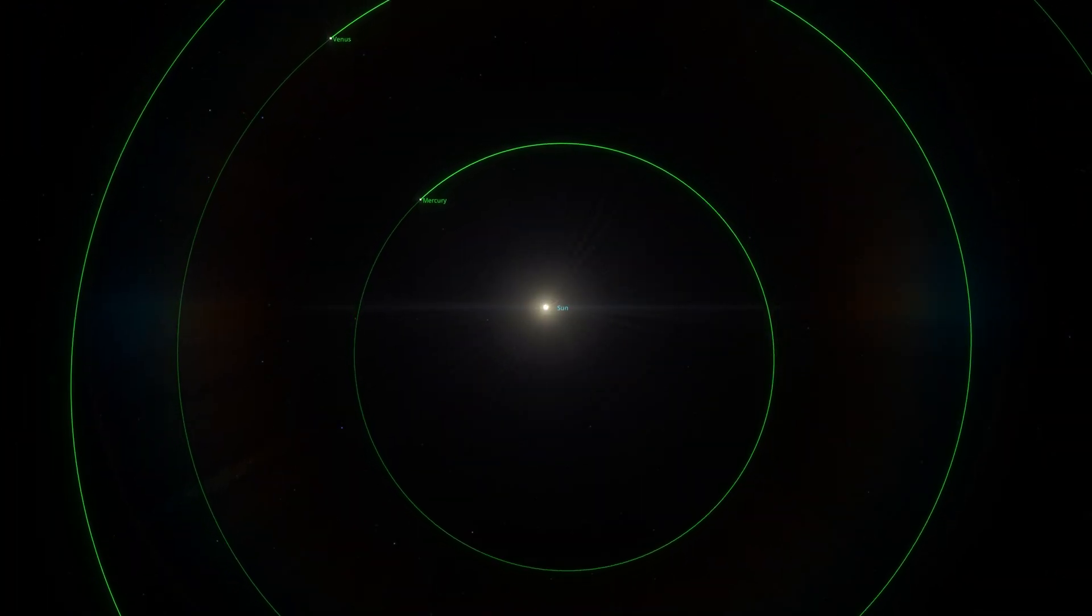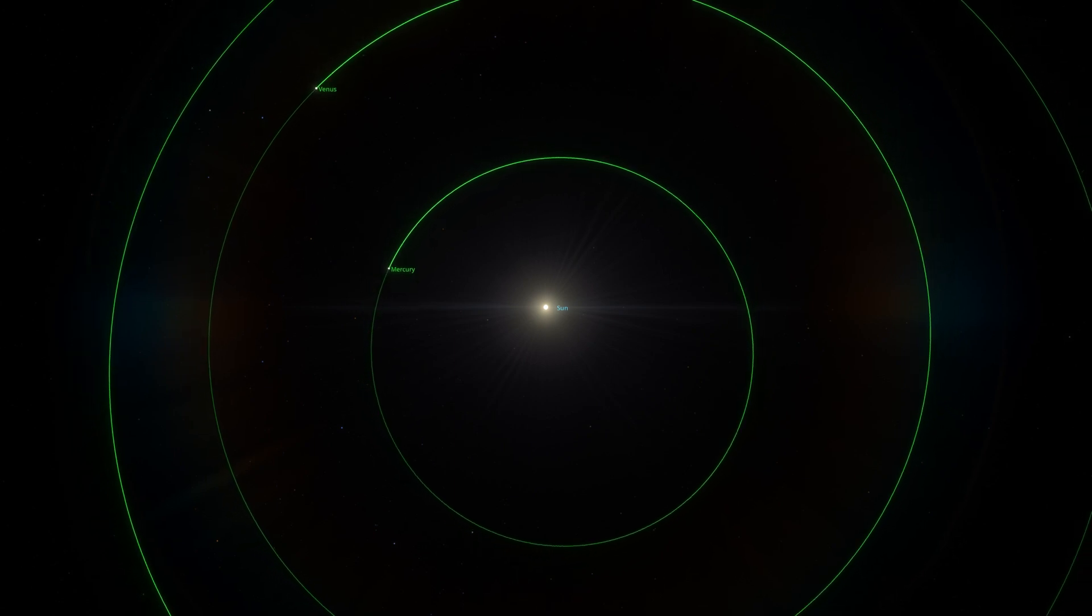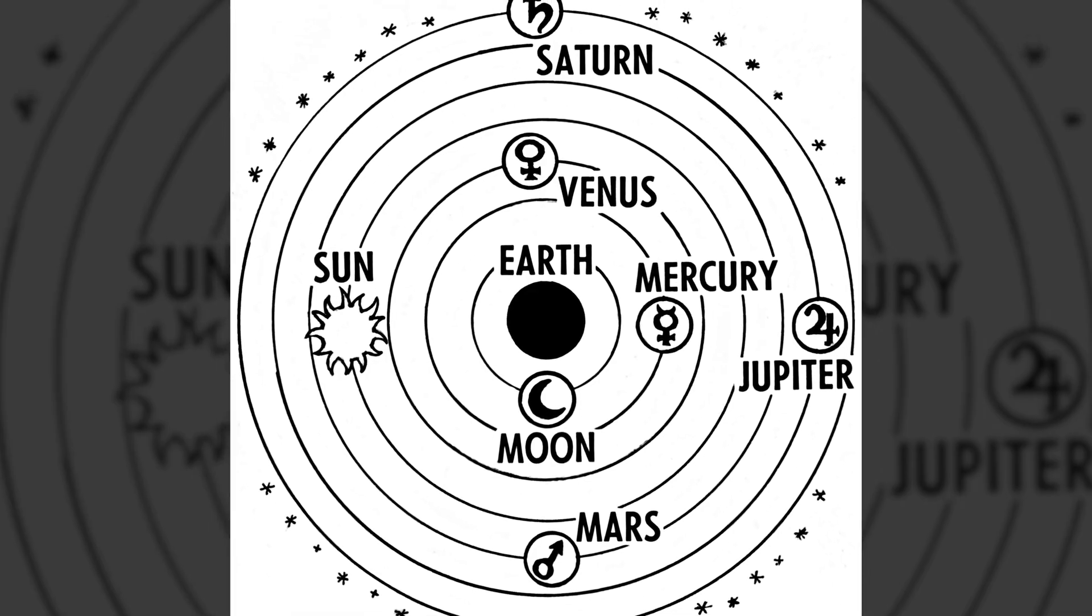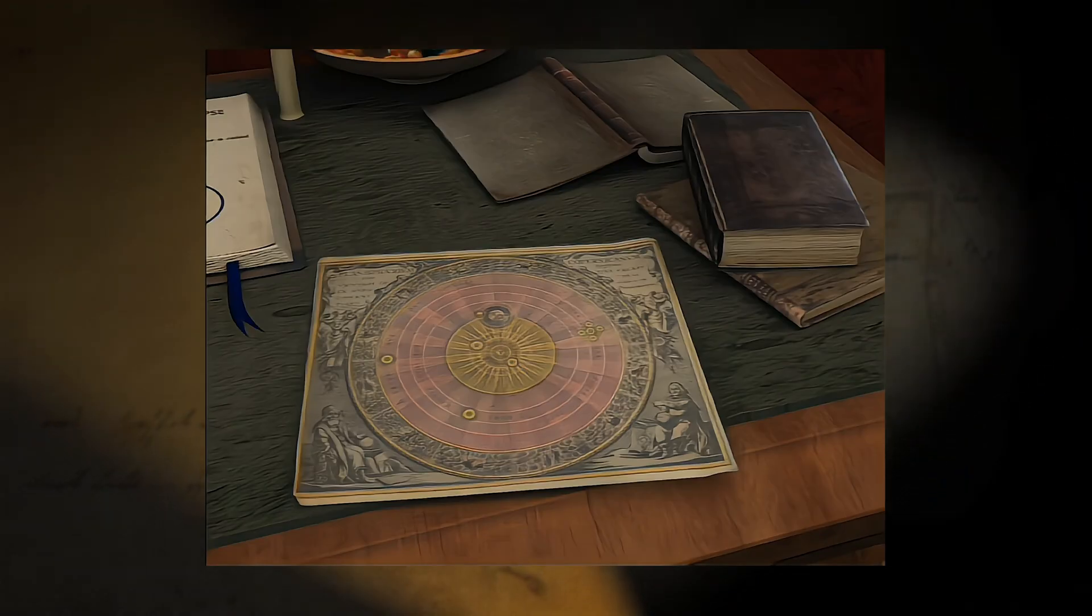Copernicus and other astronomers tried to describe planetary orbits as perfect circles. It seemed that it had to be this way because the circle is the ideal geometric shape, and the universe, obviously, had to be perfect as well. Kepler, too, was convinced of this, at least for some time.